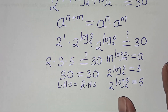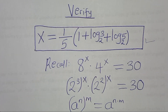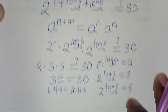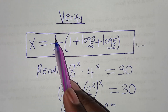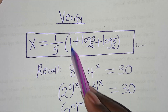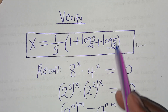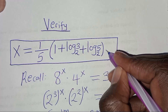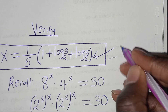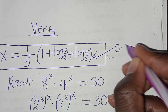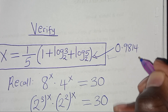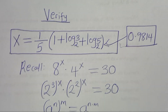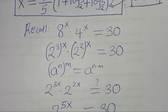This implies that the value of x, which is one-fifth times (1 plus log₂3 plus log₂5), actually satisfies the equation. Numerically, this is approximately 0.9814. Thank you for watching — kindly like this video and subscribe.